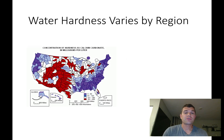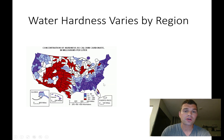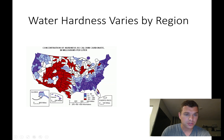For water hardness, if you look by region, your groundwater can have various amounts of calcium and magnesium. You can see that the southeast, northeast, and northwest have primarily soft water, which is considered low hardness expressed as calcium carbonate in milligrams per liter. Many parts of the country have hard water — Utah, many parts of Texas, Arizona, and Southern California.